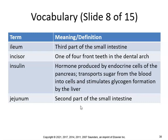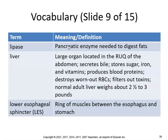The ileum is the third part of the small intestine. The incisor is one of four front teeth in the dental arch. Insulin is a hormone produced by the endocrine cells of the pancreas — it transports sugar from the blood into the cells, bringing down blood sugar, and stimulates glycogen formation by the liver for storage. The jejunum is the second part of the small intestine. Lipase is a pancreatic enzyme needed to digest fats.